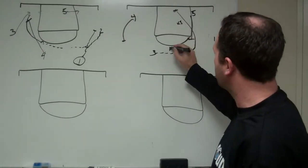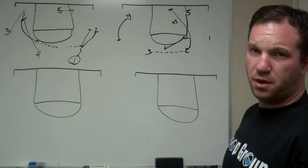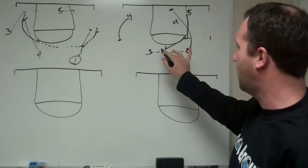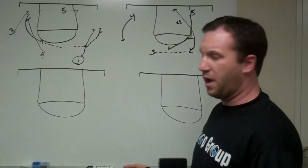And then 5 will sprint into a pick-and-roll, not letting the 3-man's man, X3, slide under. That's very important. People will try to slide under the screen, knowing that X5 is going to be late, helping on it.